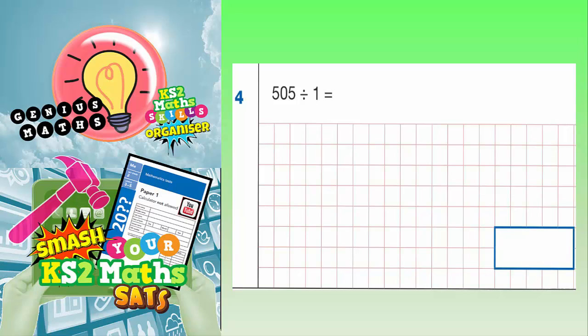Question 4. 505 divided by 1. Well, any time you divide by 1, you always end up with just the number that you started with.